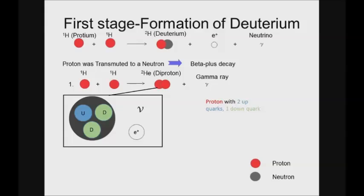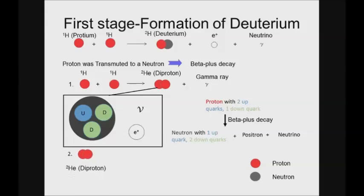To recap: during beta plus decay, a proton with two up quarks and one down quark undergoes beta plus decay to produce one neutron with one up quark and two down quarks, a positron, and a neutrino. Going back to the formation of deuterium, the diproton formed in the first reaction is extremely unstable, so it immediately breaks down into a deuterium atom, a positron, and a neutrino through beta plus decay.